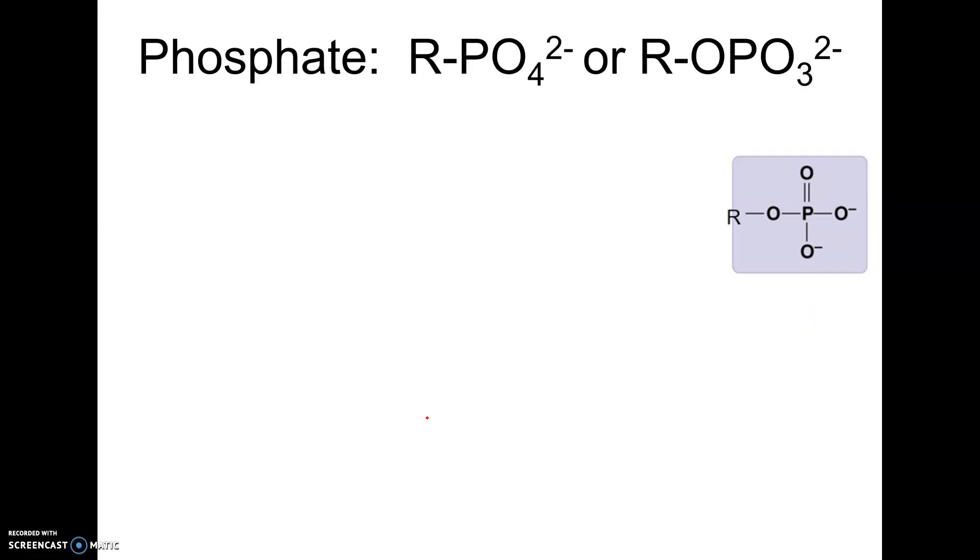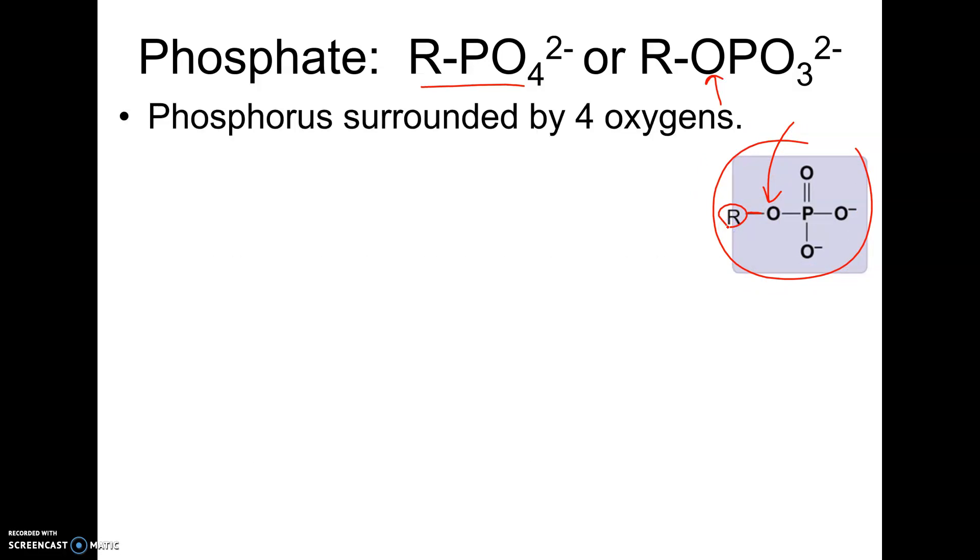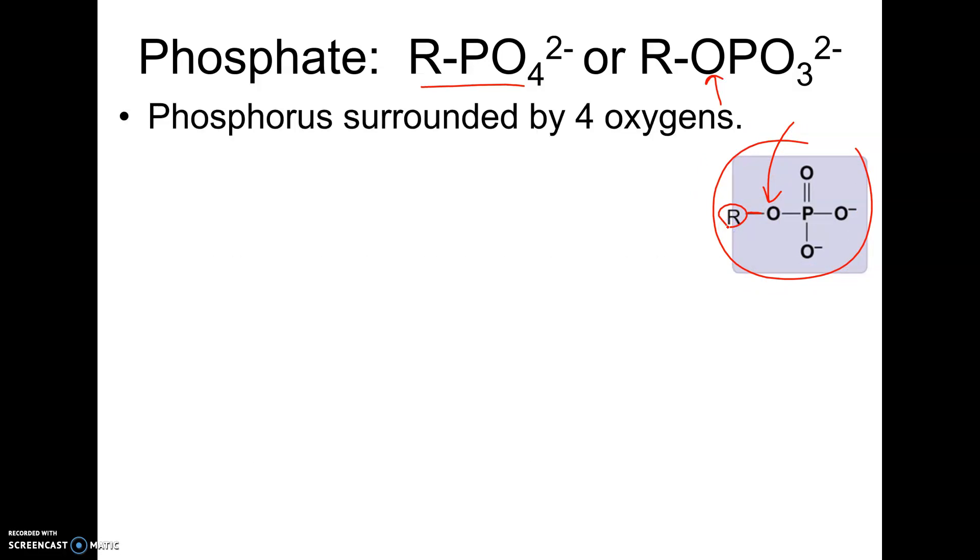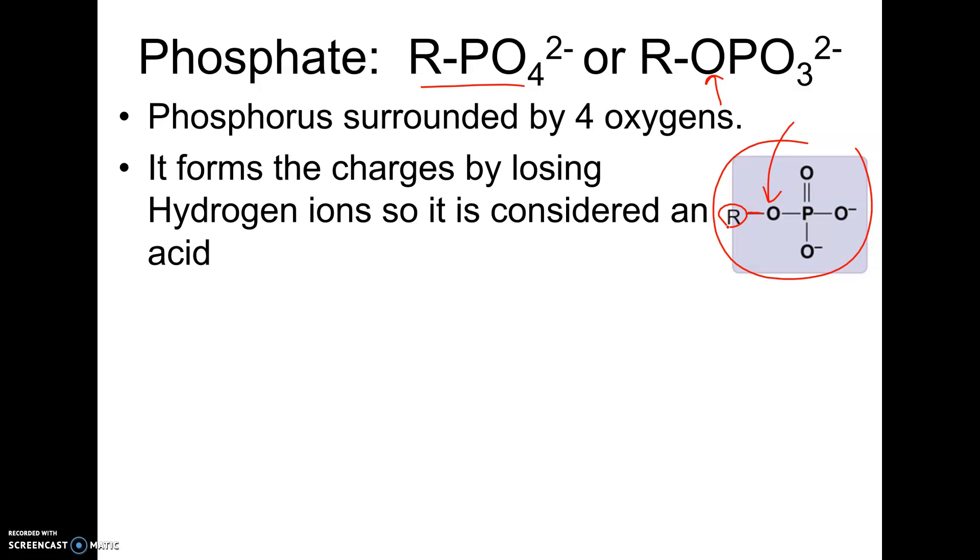All right, phosphate can be written lots of ways. Sometimes it's written like this. Sometimes it's written with this oxygen over here. And the reason that they're doing that is because they're representing how, when you actually draw it, this oxygen is what attaches to the R. So this is phosphorus surrounded by four oxygens. It tends to lose hydrogen. It can also be drawn this way with a hydrogen here and a hydrogen here. But these tend to break off. So it, again, behaves as an acid.